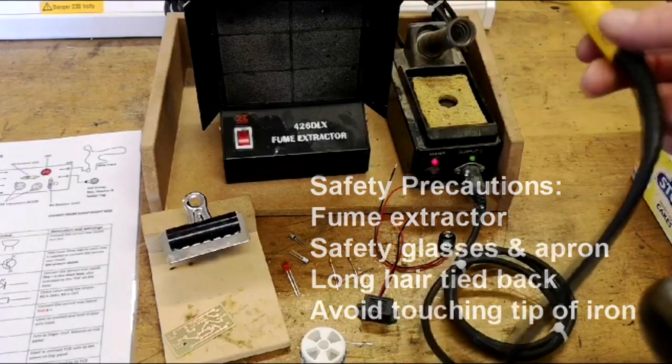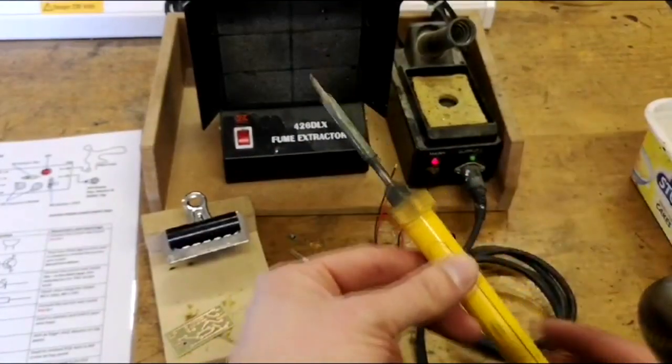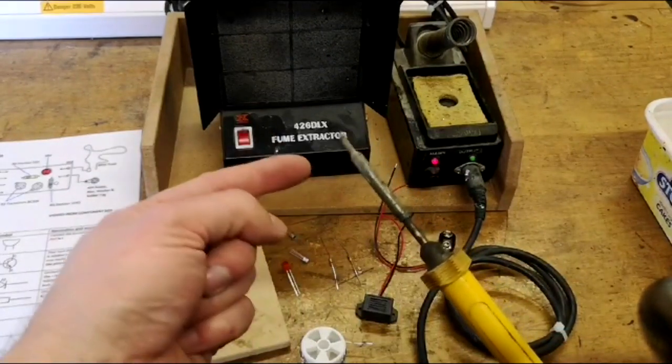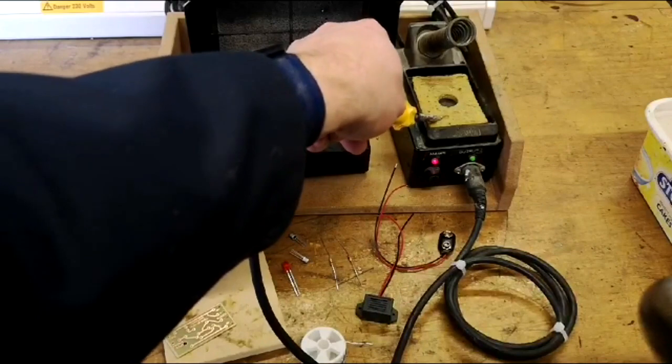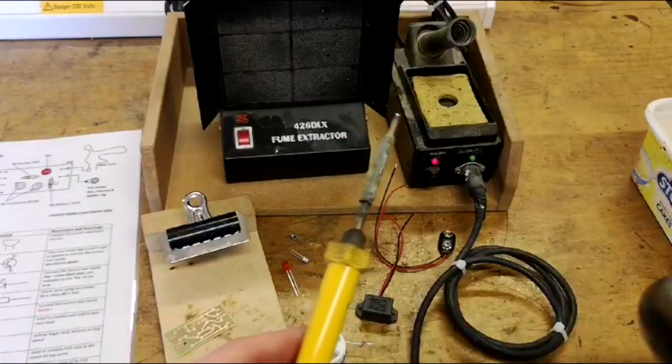You should only touch the yellow part of the soldering iron. This part here is made of metal and conducts heat and gets very hot. If I touch it onto the sponge, you can see the steam that's generating.